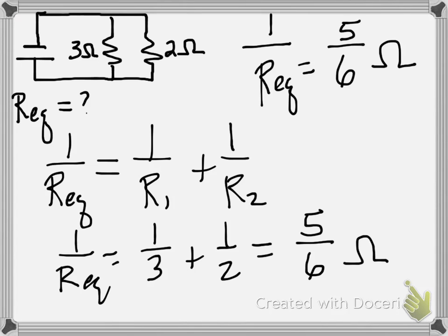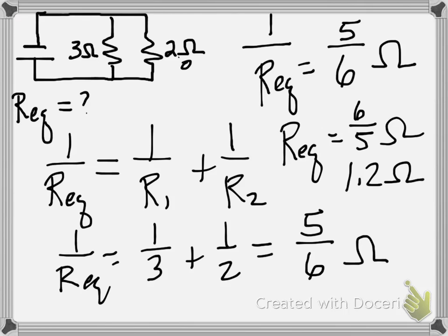Okay. This is the part where people are the most likely to get confused. So 1 over the reciprocal is equal to 5 over 6 ohms, which means, I'm sorry, the equivalent resistance is equal to 6 over 5 ohms, or 1.2 ohms. And I guess we would have to assume that that was a 2.0 ohm resistor. Otherwise, it's just a 1 ohm resistance.